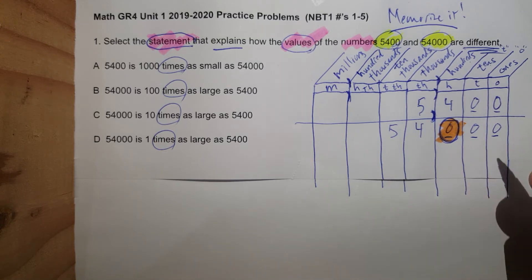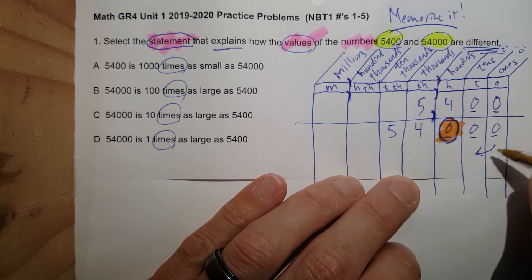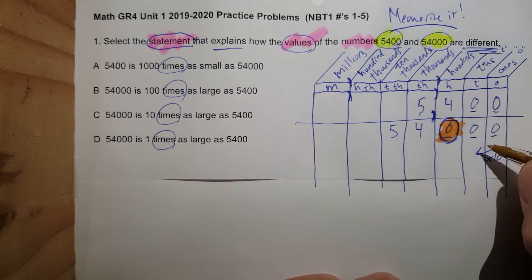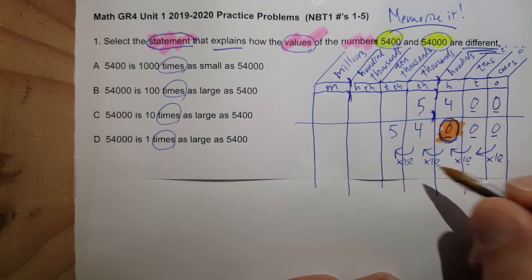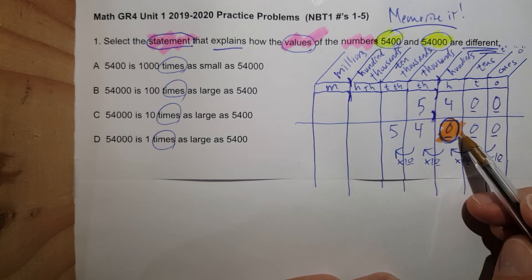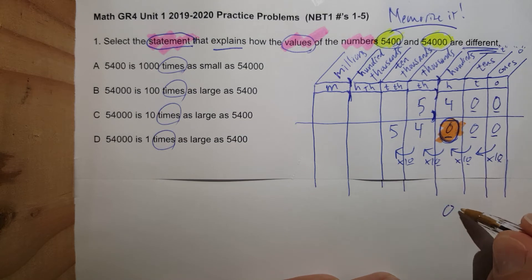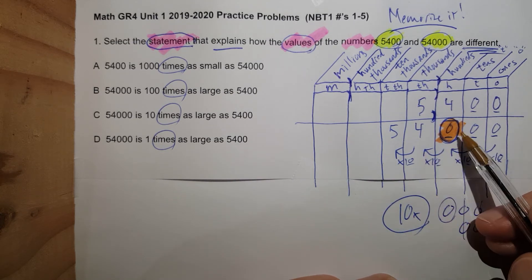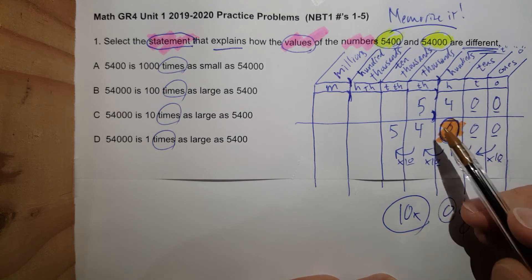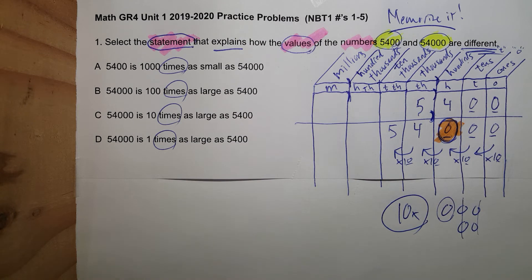Here's how the place value table works. Every time you move over one, it's times ten. When I go over again, it's times ten. When I go over again, it's times ten. That means you are adding a zero every single time. The only difference between these two numbers, notice how this one has three zeros, this one has two. So if I stack them just like that, the difference is ten times. Ten times. See that? We just went over one more place. All we did was add a zero, which means you would take 5,400 times ten. Let's see that, let's prove it.